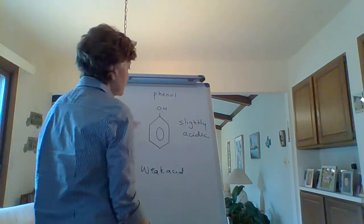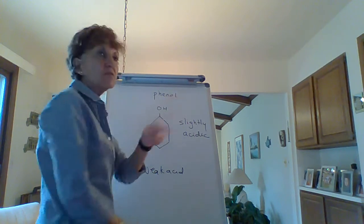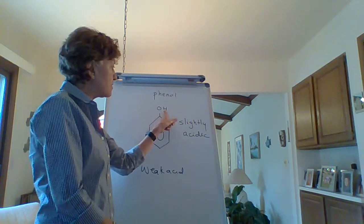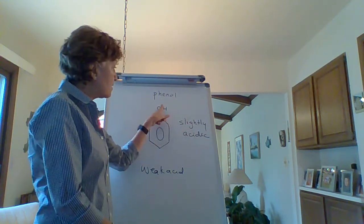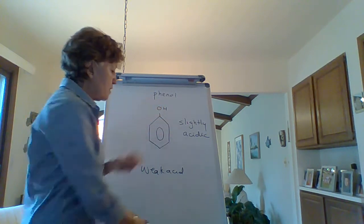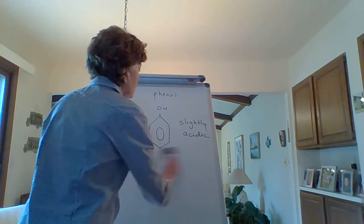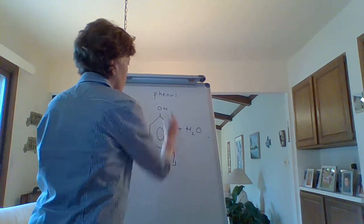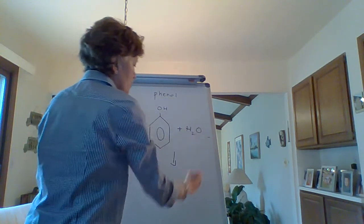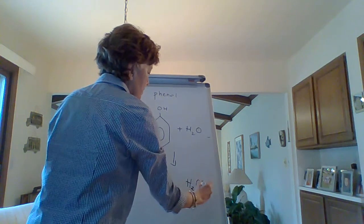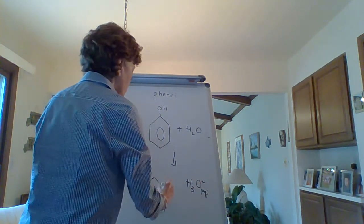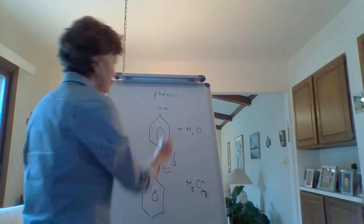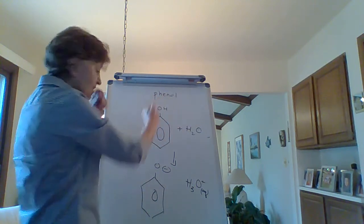The reason this is an acid is that this hydrogen ion—remember an acid by definition is something that can donate a proton or hydrogen ion—can be donated, and then the electron gets delocalized. When you show this phenol in water, the hydrogen ion attaches to water to form the hydronium ion.